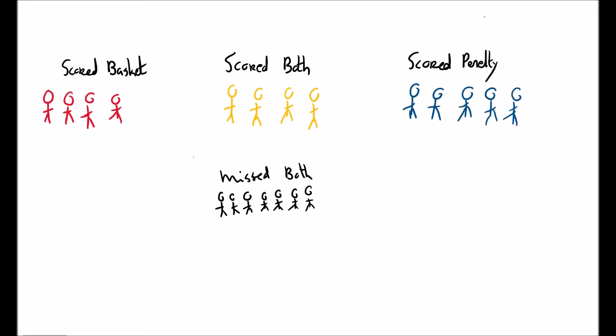After looking at two events that were independent, let's have a look at events that might not be independent. So in this we have a group of 20 students. Some of the students were shooting basketballs and shooting to score a penalty. These students scored the basket, these students scored the penalty, these students scored both, and these students scored none.